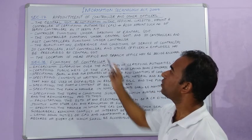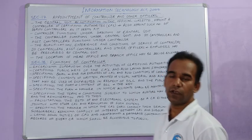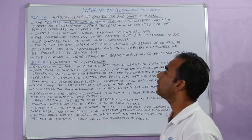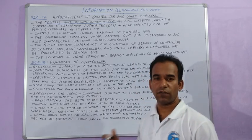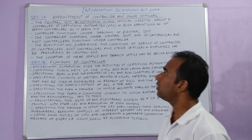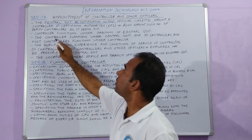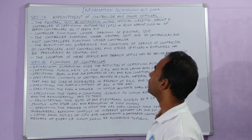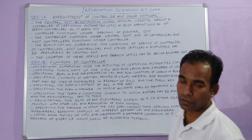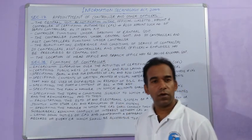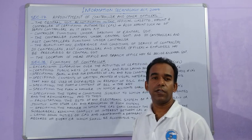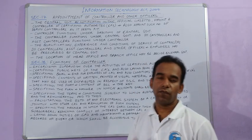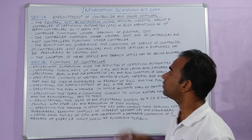The controller functions under the directions of the central government. Since the central government appoints the controller, the controller works under the central government. Deputy controllers and assistant controllers function under the controller.